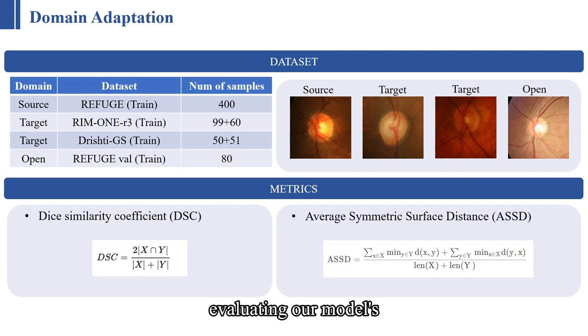When it comes to evaluating our model's performance in segmentation adaptation, we relied on two key metrics. Dice coefficient: this metric assesses the accuracy of our mask predictions. And average symmetric surface distance (ASSD): we use ASSD to gauge the effectiveness of our boundary segmentation.